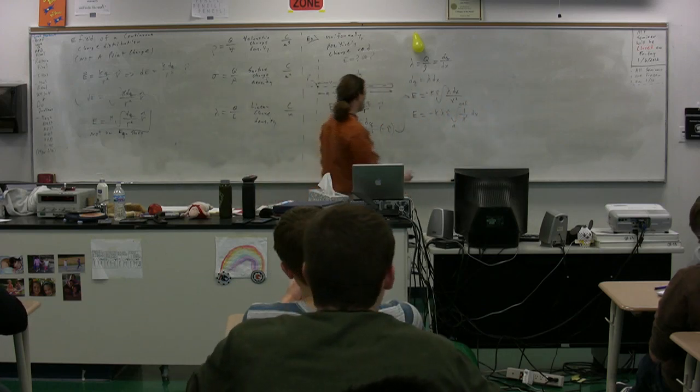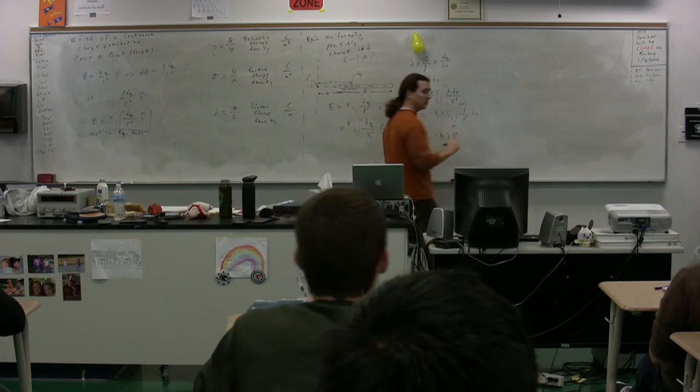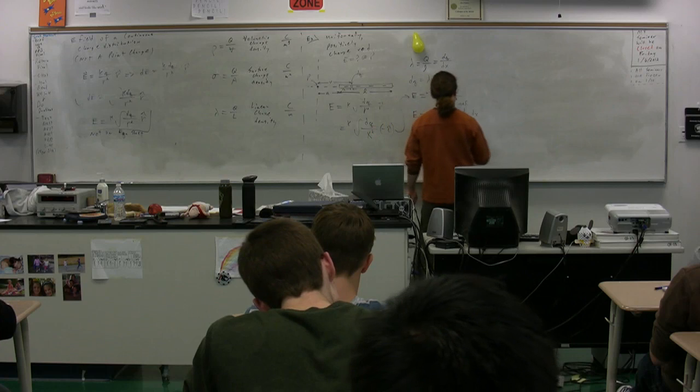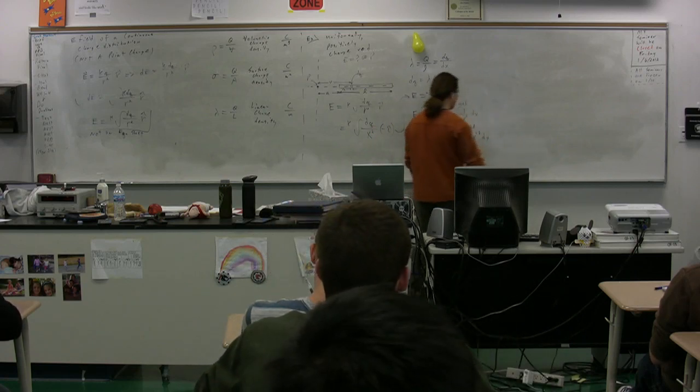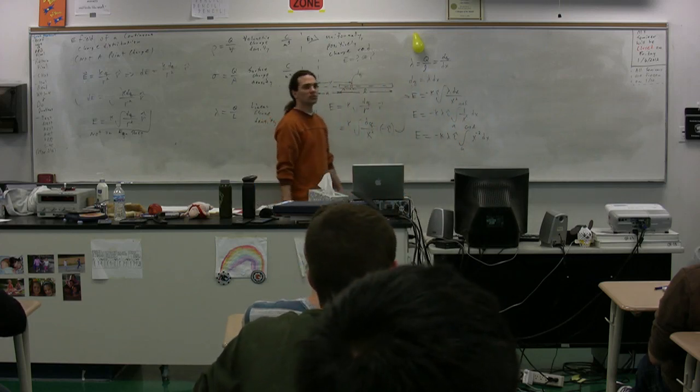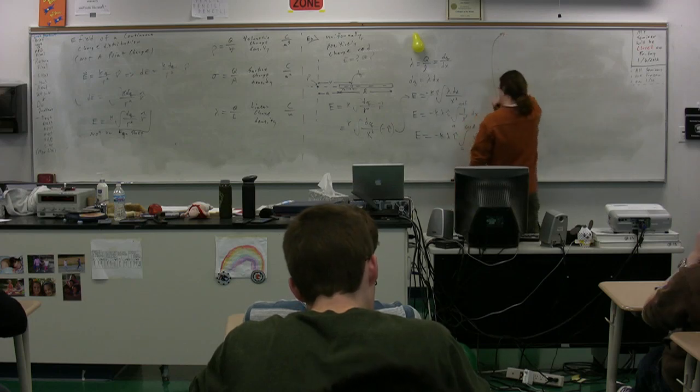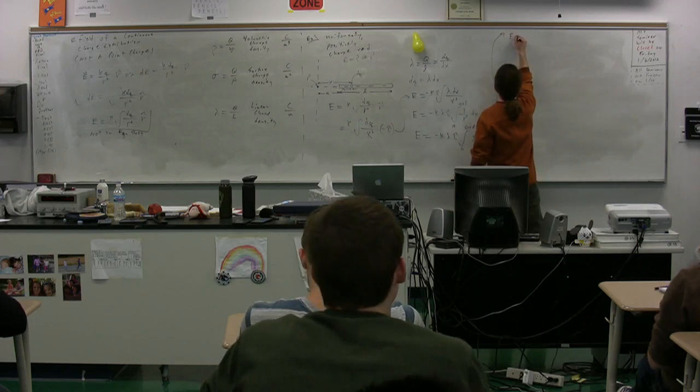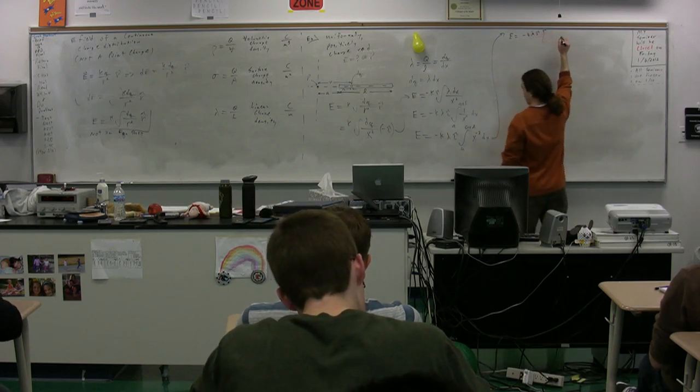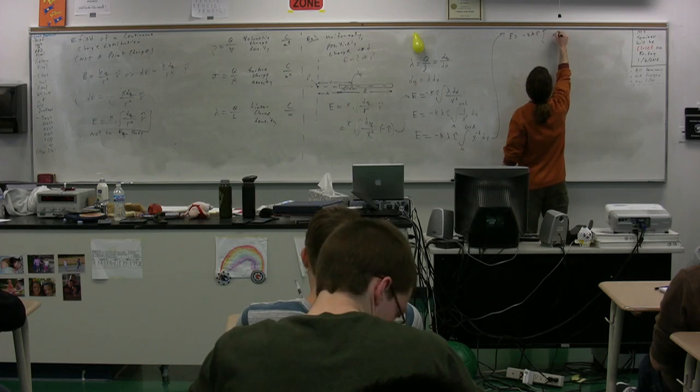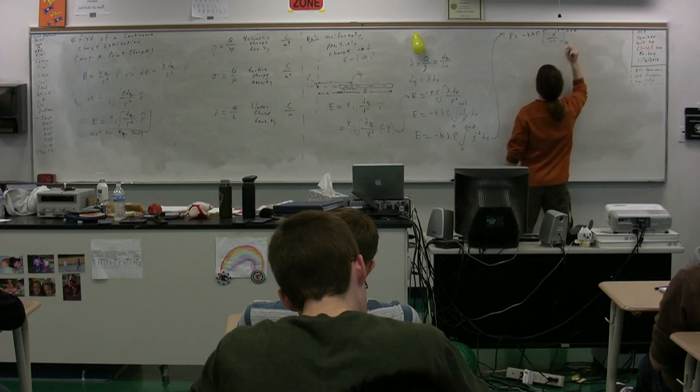So now we need to take the integral. So let's do one more step so it's a little bit more clear what we're going to do with the integral. So we have the integral, then, from a to a plus l of x to the negative 2. Because 1 over x squared is just x to the negative 2. So please take the integral, Bailey, of x to the negative 2. I'm sorry, I missed that. I was busy here. So what was it? x to the negative 1 over negative 1. Over negative 1. And we still have our limits from a to a plus l.